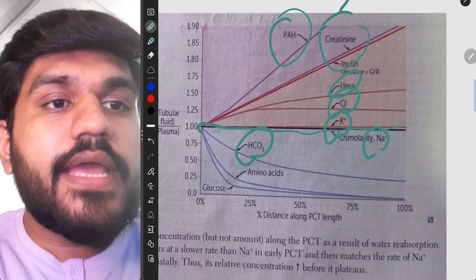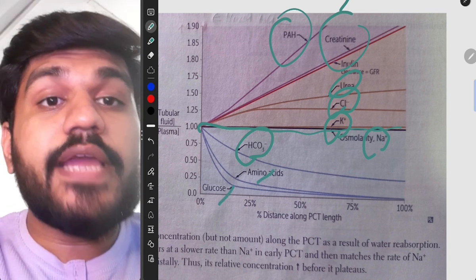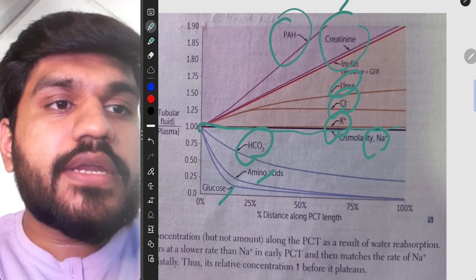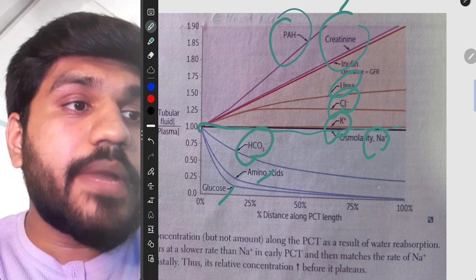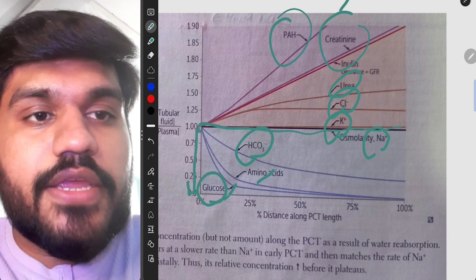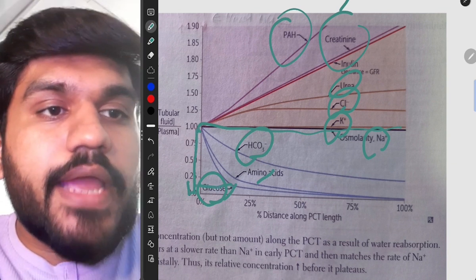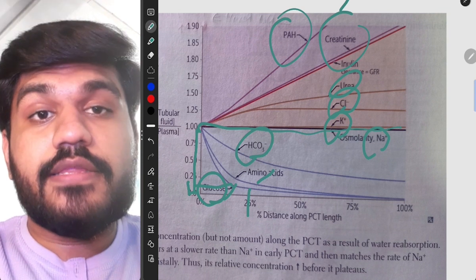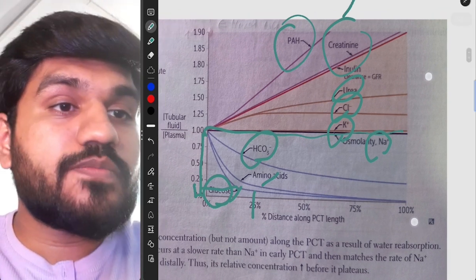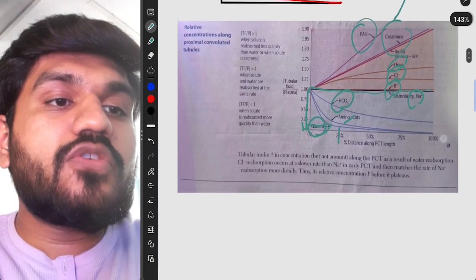Urea and chloride are getting secreted into the urine. Sodium and potassium are not really changing much, but HCO3 minus which is bicarbonate, amino acid and glucose are getting absorbed in the kidney. Bicarbonate is not really getting that much absorbed by the kidney, but as you can see the glucose is getting emptied like nearly here at 25 percent of PCT length.